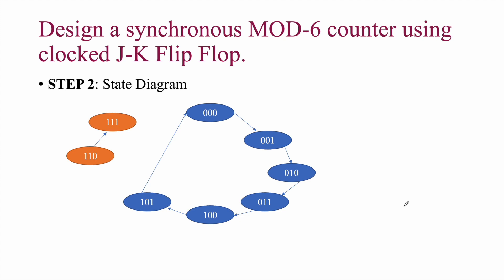Step 2 is to draw the state diagram. For a mod 6 counter with three-bit states, the sequence is: 000 → 001 → 010 → 011 → 100 → 101 → 000. That gives us 6 valid states. From state 101 it jumps directly back to 000. States 110 and 111 are invalid states and will not be visited.